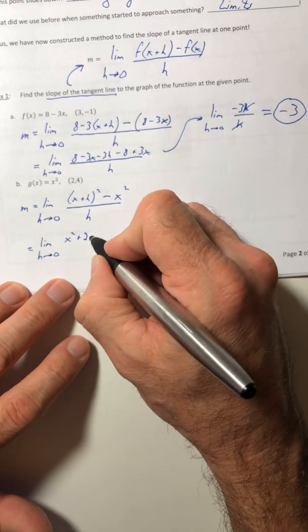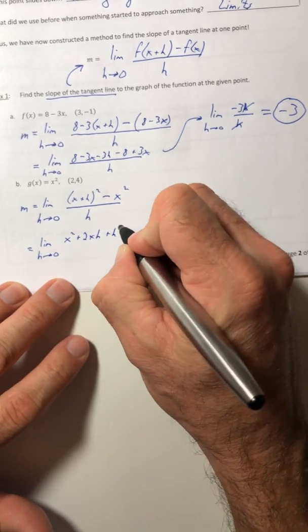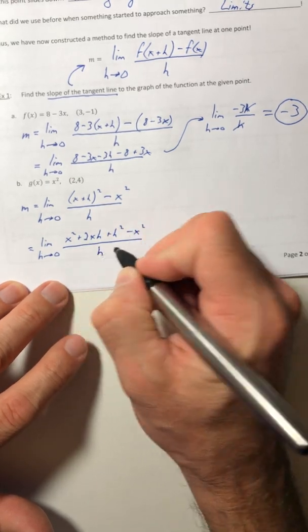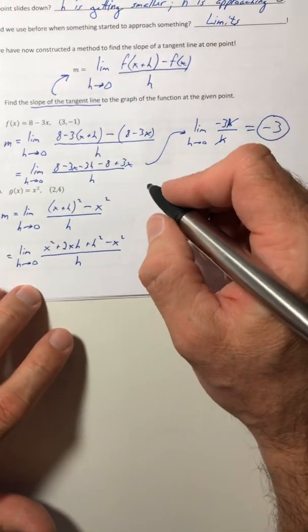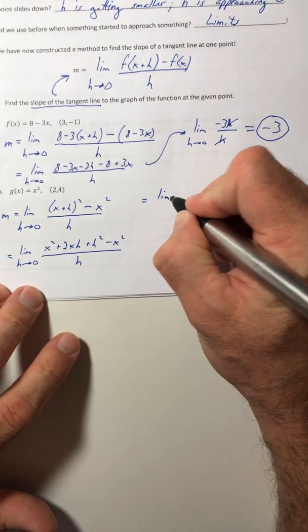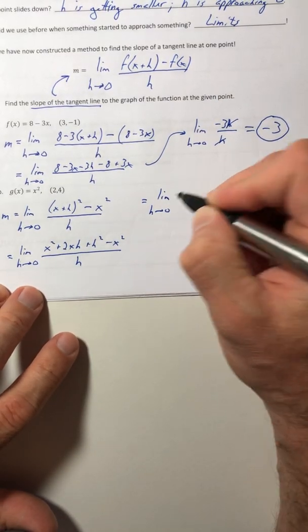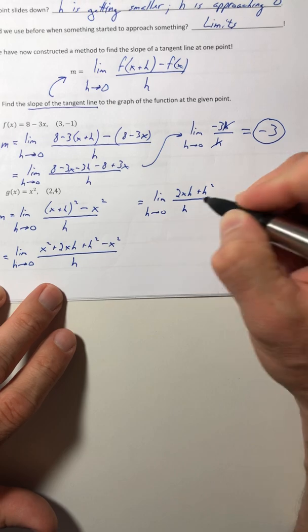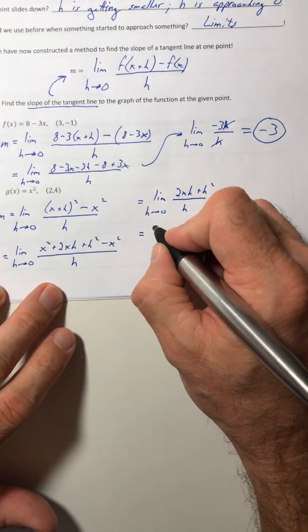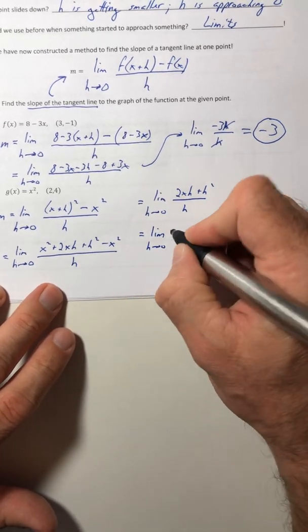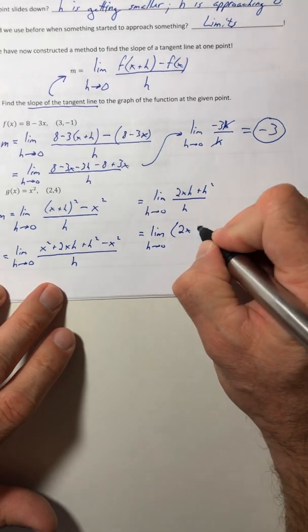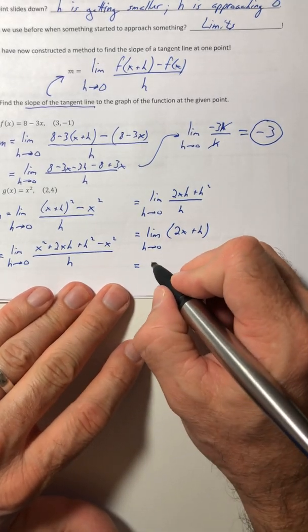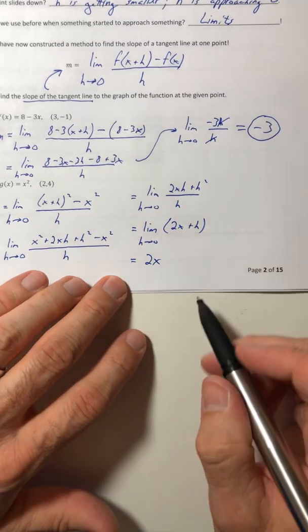x squared plus 2xh plus h squared minus x squared. So your x squareds cancel off. So 2xh plus h squared, all over h. You can cancel an h out from every term, and now you can plug the 0 in for h, and you end up with 2x.